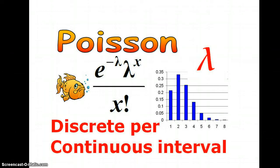The Poisson, you've actually got discrete per continuous interval. What does that mean? Discrete means you can count them, so you can count the number of events, and it's over a continuous interval, so that's time or area, something like that. Not a certain number of trials.